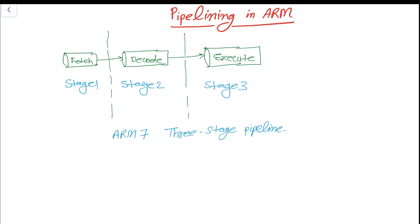The pipeline is used to execute instructions and speeds up execution by fetching the next instruction while other instructions are being decoded and executed. The fetch stage loads an instruction from memory, the decode stage identifies the instruction to be executed, and the execute stage processes the instruction and writes the result back to the register.